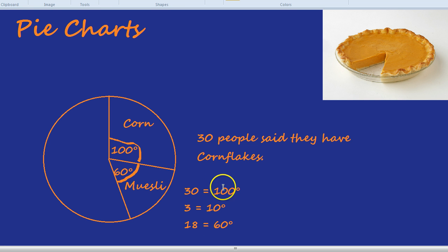And again, the secret is find out what 10 degrees equals, so write it out: 30 people equals 100, divide by 10. Sometimes you'll have to divide by lots of different types of numbers to get down to 10 degrees. So if those 30 people were 120 degrees, you'd divide by 12 and that would get you 10 degrees. Always try and find out what 1 degree or 10 degrees is and then you can multiply up to get to the degrees you're looking for. And that is one of the secrets of interpreting pie charts.